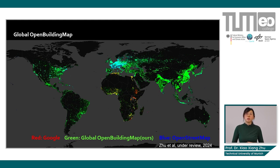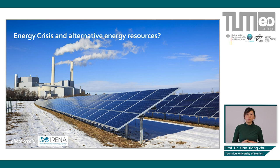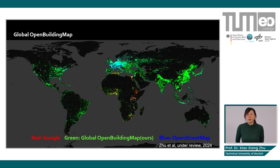The most important overview is this pseudo-color image where red represents Google's data, green is our Global Open Building Maps, and blue is OpenStreetMap. Wherever one color is dominant, that data source is the only one available for that area. In Europe, OpenStreetMap and our data have good coverage, while in Africa a yellow color dominates, meaning both Google and our data have good coverage there.